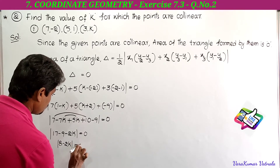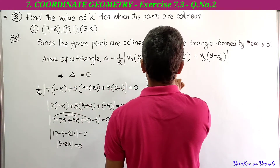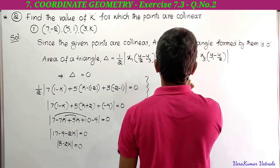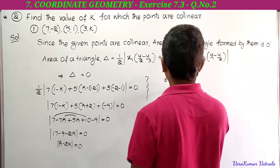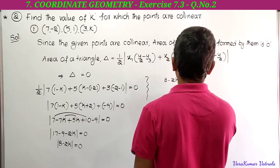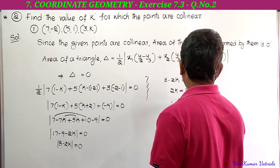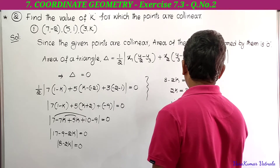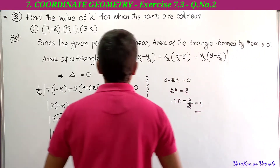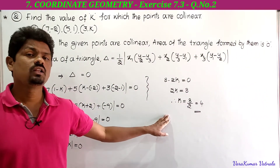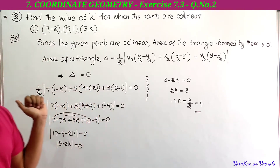17 minus 9 is 8, so 8 minus 2k equals 0. Removing the modulus, we get 8 - 2k = 0, then 2k = 8. Taking 2 to the right side, k = 8/2 = 4. So k is equal to 4. We have found the value of k for which the given three points are collinear. This is the first bit of the second problem.